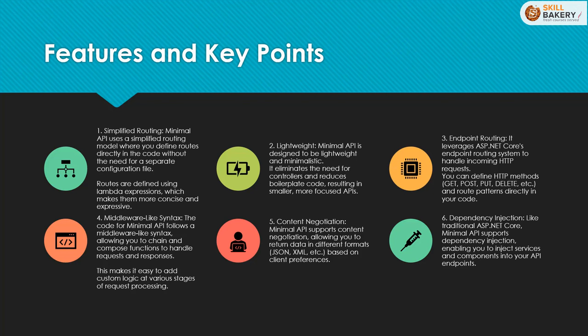Now let's take a look at features and key points of Minimal API in ASP.NET Core. First is simplified routing. Minimal API uses a simplified routing model where you define routes directly in the code without the need for a separate configuration file. Routes are defined using lambda expressions, which makes them more concise and expressive. Next is lightweight — Minimal API is designed to be lightweight and minimalistic, eliminating the need for controllers and reducing boilerplate code, resulting in smaller, more focused APIs.